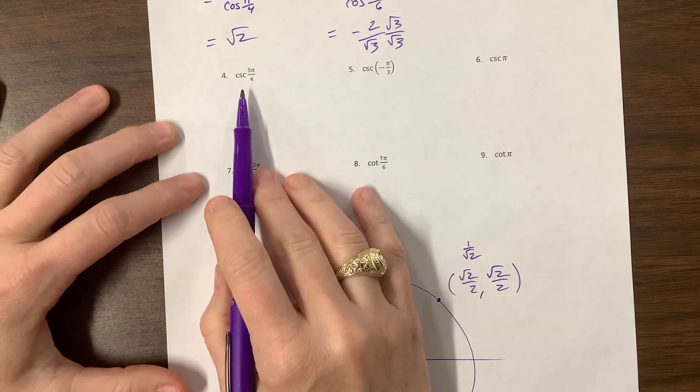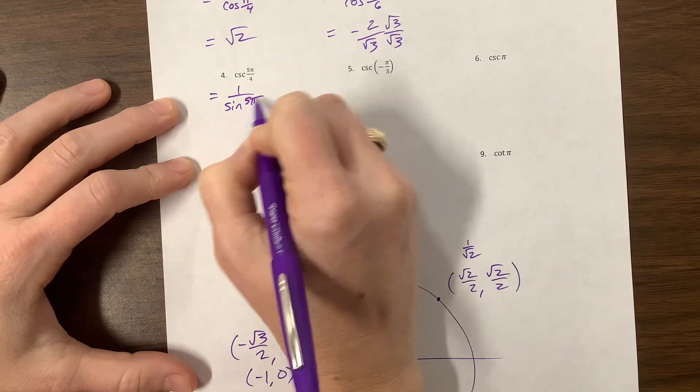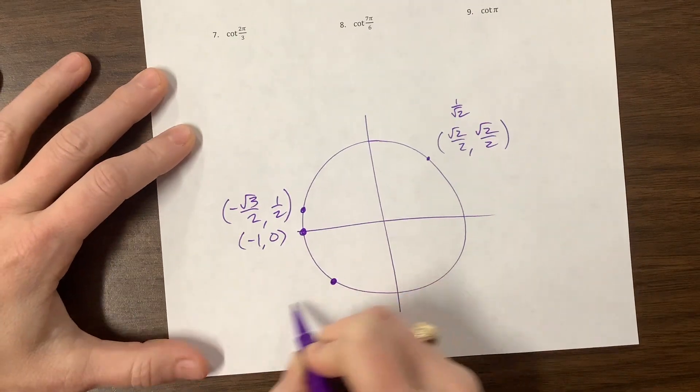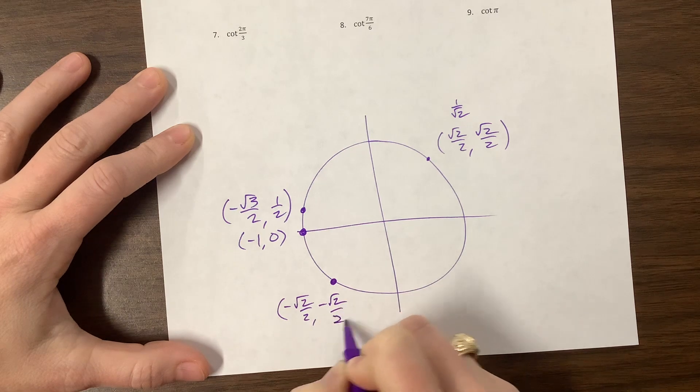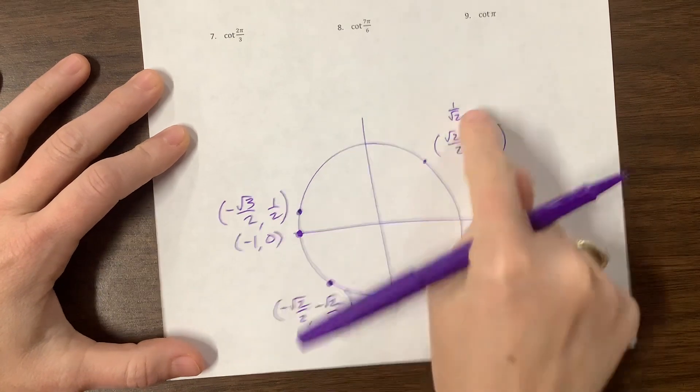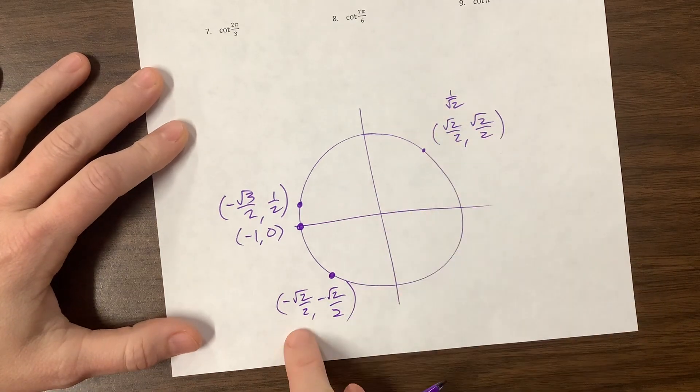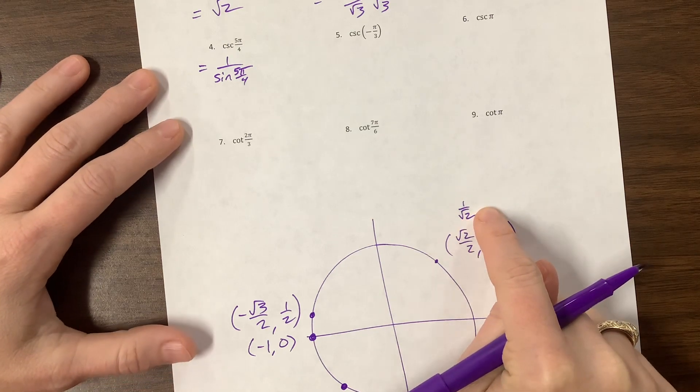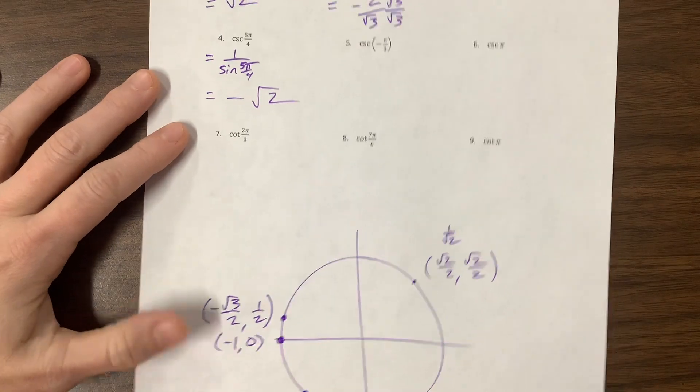Cosecant. This is going to be 1 over sine. 1 over sine of 5 pi over 4. 5 pi over 4 is down here. It has the coordinates. They're both negative root 2 over 2. Comma negative root 2 over 2. And which those had been 1 over root 2, which we rationalized to get this. So when I take the reciprocal of 1 over root 2, I get root 2, but it's negative. So this is a negative root 2. Fantastic.